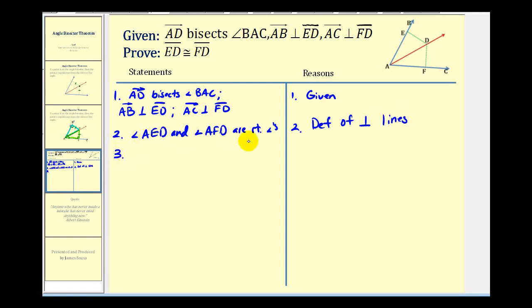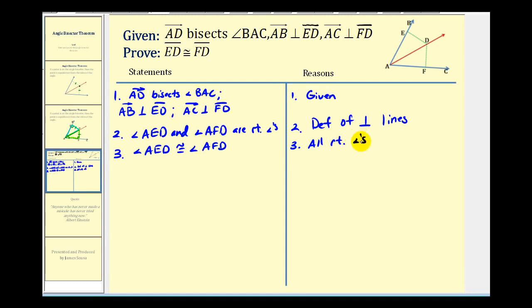And then if these two angles are right angles, they would be congruent — angle AED is congruent to angle AFD. The reason for this is that all right angles are congruent. So we know these are right angles and that they're also congruent.